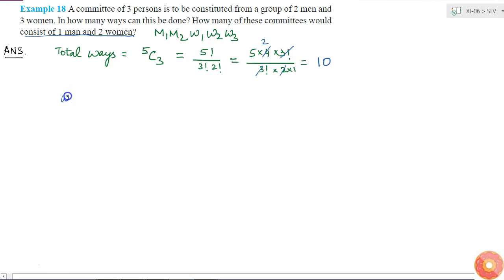With the condition 1 man and 2 women, I have to select 1 man from these 2 people, so it is 2C1, and I have to select 2 women from 3 women, that is 3C2. These are the different ways in which I can select the committee members such that the committee contains 1 man and 2 women.